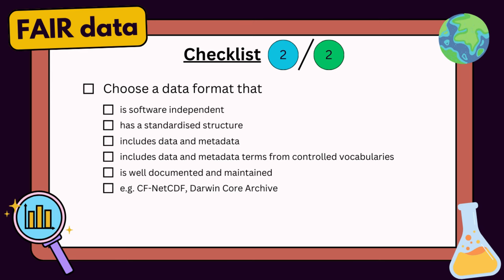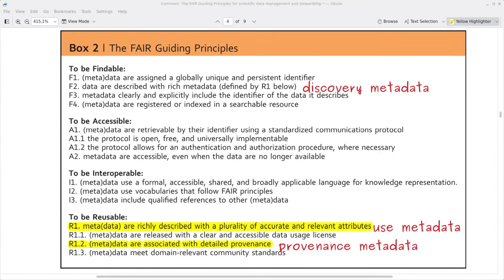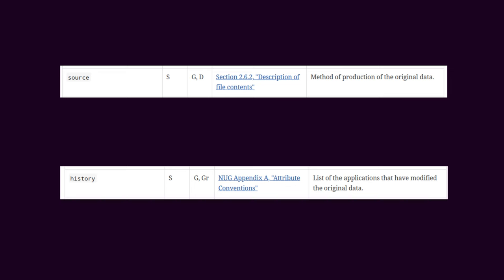So we're going to add to our checklist: choose a license — for example CC BY 4.0 or CC BY 4.0 ShareAlike. Principle R1.2 is that data or metadata are associated with detailed provenance. Provenance is the history and origin of the data — you use provenance metadata to describe how the data were collected or created, how they've been processed, and if so by who and when. In most FAIR-compliant datasets there are specific terms in the metadata to describe the provenance — for example, in the CF conventions used in CF-NetCDF files, you have the 'source' and 'history' terms. I'm not going to add another item to our checklist for this because I think it's already encompassed by most good interoperable data formats, but bear this in mind.